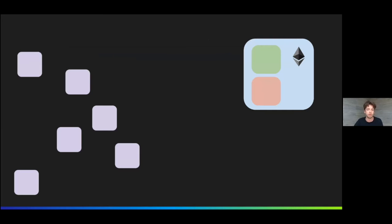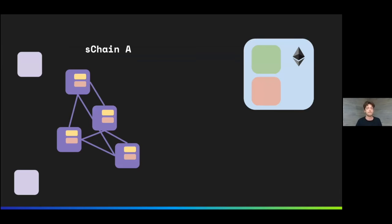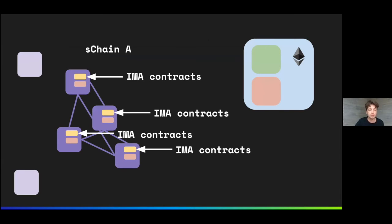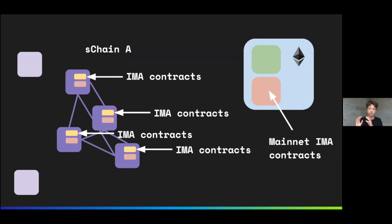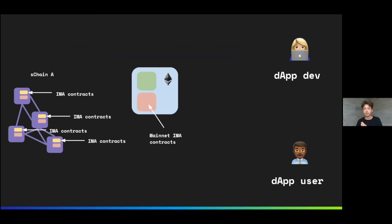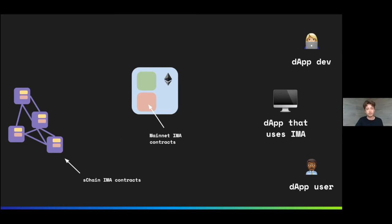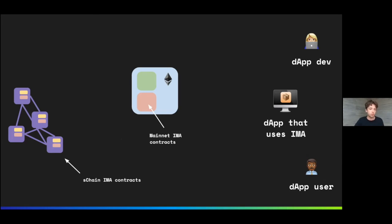Let's take a look at a typical use case of the IMA.js library. Let's say we have S-chain A with four nodes, and the S-chain part of the IMA contracts are pre-deployed on the S-chain. We also have the IMA contracts live on the EZero mainnet. A DApp developer could integrate the IMA.js library into their app to simplify interactions with IMA for the end user, so the DApp user could easily access both S-chain and mainnet parts of the system.